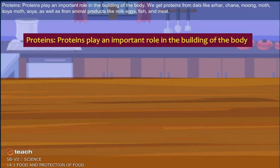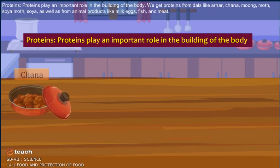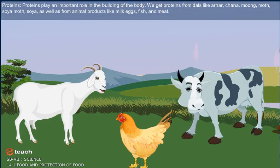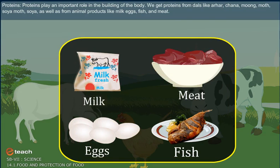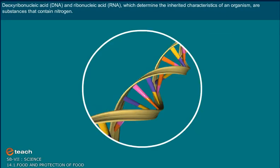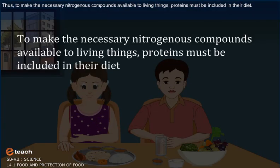Proteins play an important role in the building of the body. We get proteins from dals like arhar, chana, moong, moth, and soya, as well as from animal products like milk, eggs, fish, and meat. Proteins are basically carbon compounds, i.e. organic substances which contain nitrogen. Enzymes, which facilitate various biochemical processes, are basically proteins. DNA and RNA, which determine the inherited characteristics of an organism, are substances that contain nitrogen. Thus, to make the necessary nitrogenous compounds available to living things, proteins must be included in their diet.